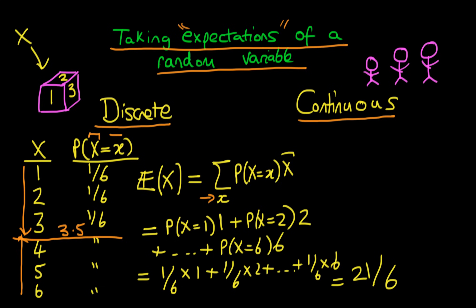That's the discrete case and we've talked about what the formula is, but what's the intuition behind it? You can think of it as a weighted sum. Without the probabilities it would just be a plain sum over all x values, but the probabilities provide the weighting in that sum. In general the probabilities won't all be the same, and the weights intuitively provide more weight to those observations which are more likely to occur. That's why we use this formula to calculate the expected value of X for the discrete case.